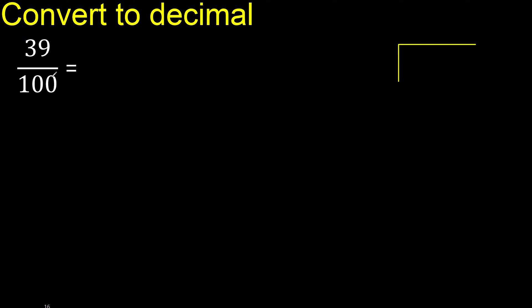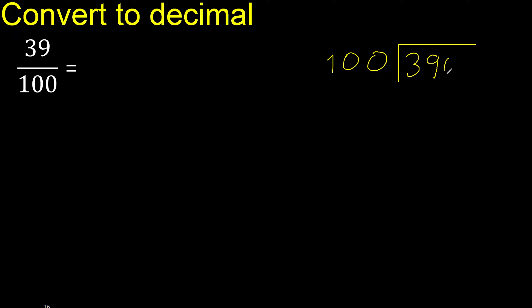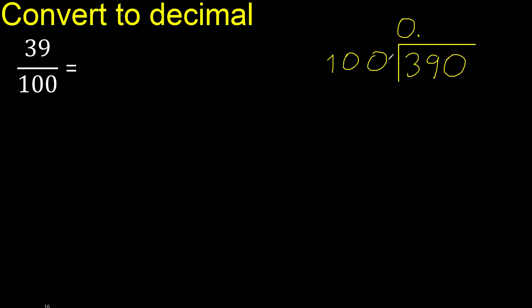39 divided by 100. 39 is less, therefore complete — always complete with 0. Here: 0 point. Point only once. Is not less: 100.